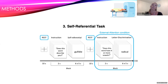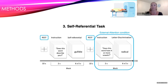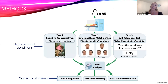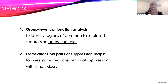Finally, we had the self-preferential task, which comprised a self-referential condition that activates the DMN and an external attention condition that deactivates the DMN. Participants were shown trait adjective words and in the self-referential condition asked to appraise if the word described them, while in the external attention condition asked to determine if the word had four or more vowels. Because our primary interest was in DMN suppression during higher order cognitive processing relative to rest, we restricted our analyses to the higher demand condition in each task. Our contrasts of interest were rest vs. reappraisal, face matching, and letter discrimination from the external attention task. To identify regions of common task-related suppression, we conducted group-level conjunction analyses, and to investigate consistency within individuals, we computed cross-task correlations between pairs of suppression maps.